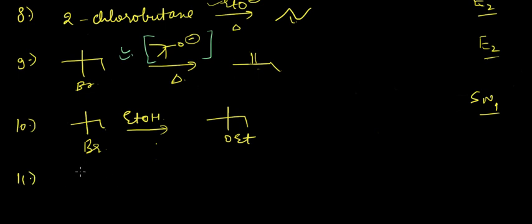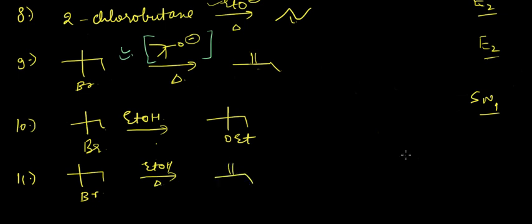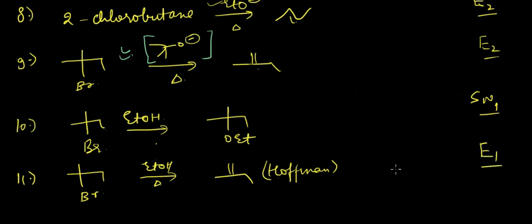In the next case, with EtOH and heat, we get the Hofmann product. This is because SN2 is blocked due to steric hindrance, and this is now an example of an E1 reaction.